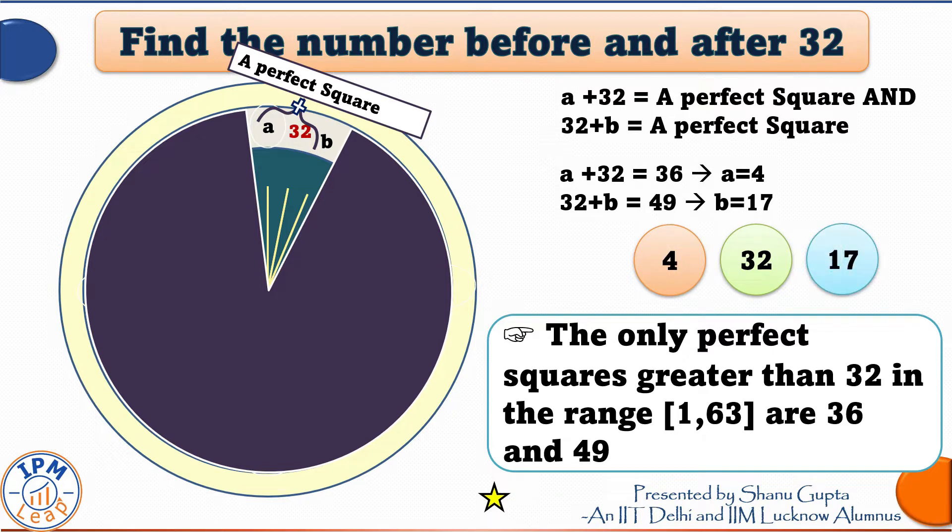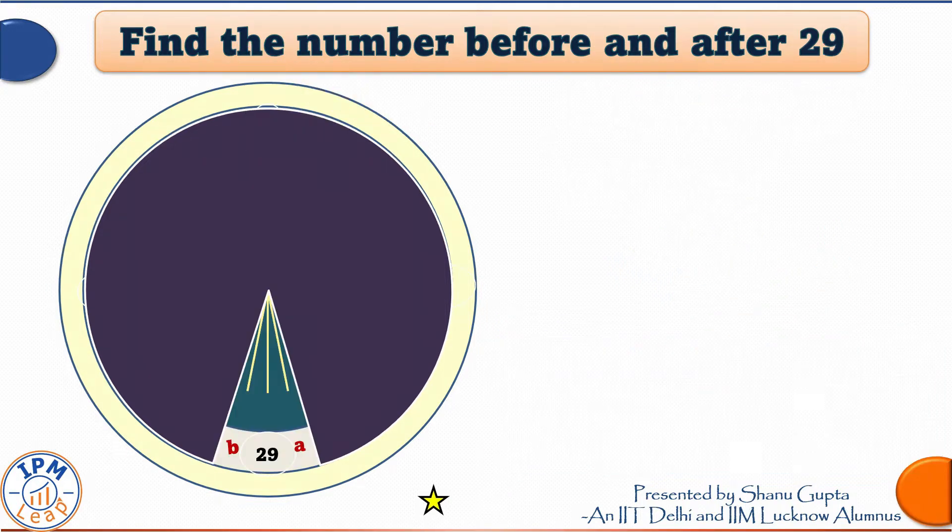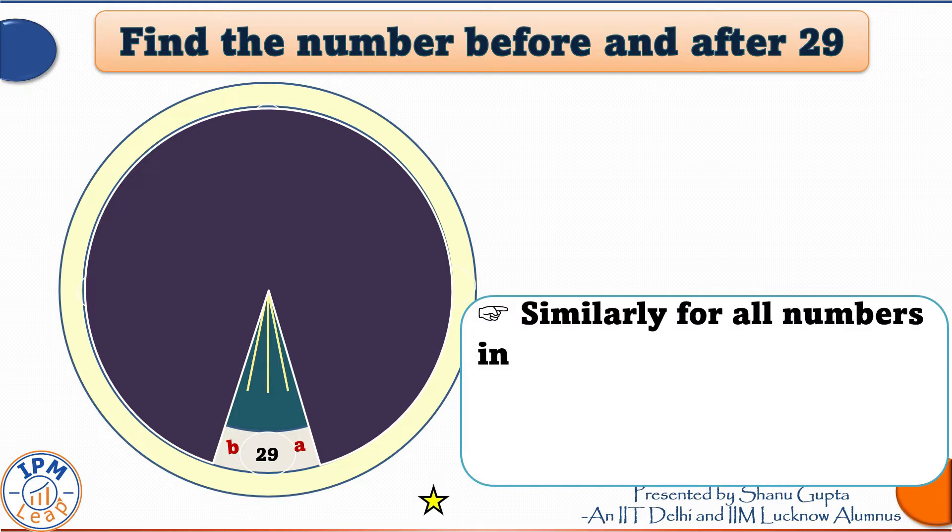So the two numbers between which 32 is sandwiched are 4 and 17. You can verify this from our original circle.